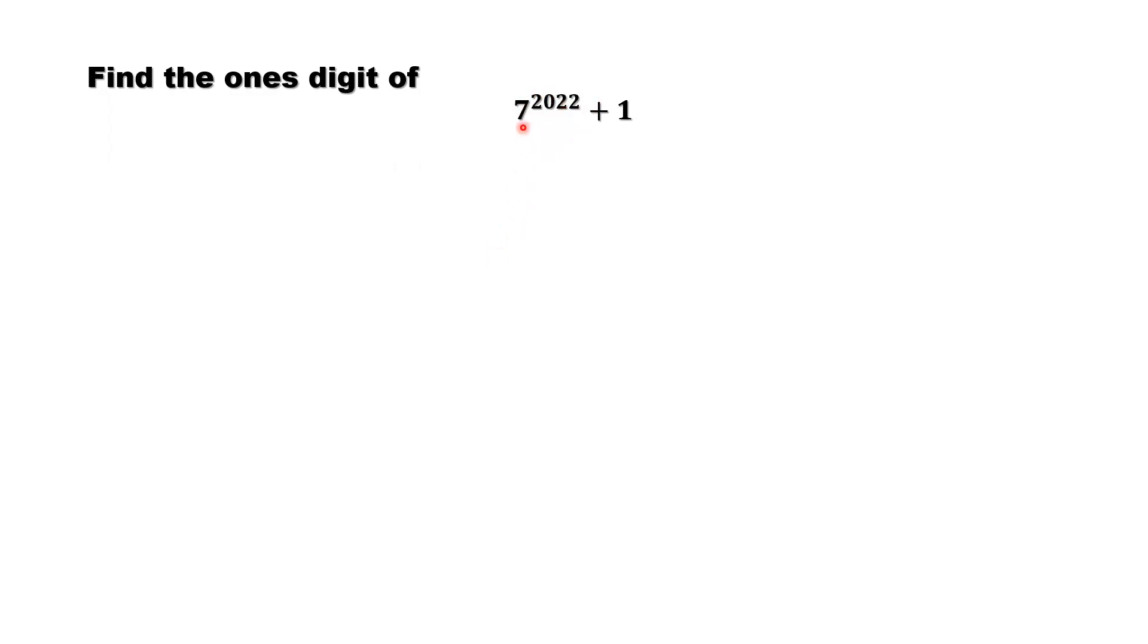That means 7 times 7 times 7 times 7 comes back to what? The last digit, ones digit is 1. 7 times 7 is 49, the ones digit is 9.